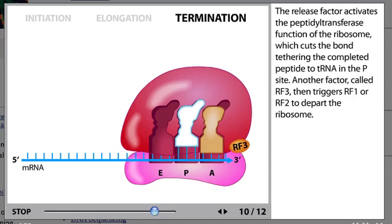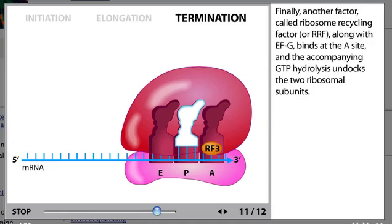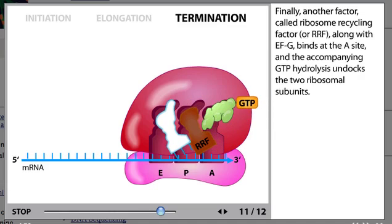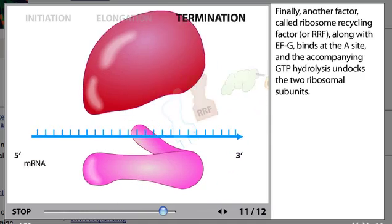Another factor, called RF3, then triggers RF1 or RF2 to depart the ribosome. Finally, another factor called ribosome recycling factor, or RRF, along with EF-G, binds at the A site, and the accompanying GTP hydrolysis undocks the two ribosomal subunits.